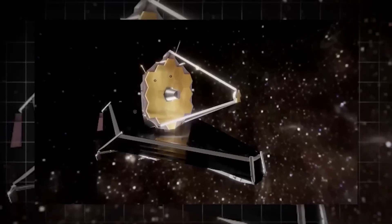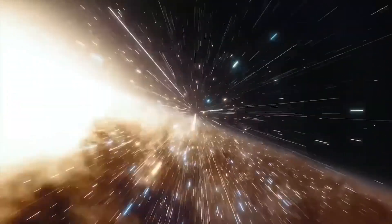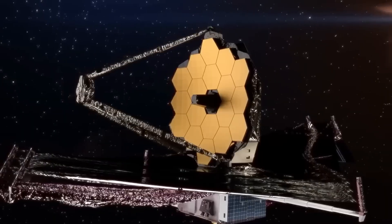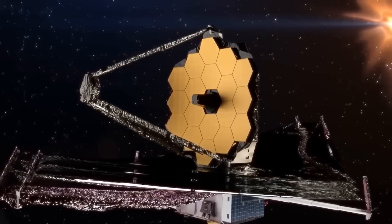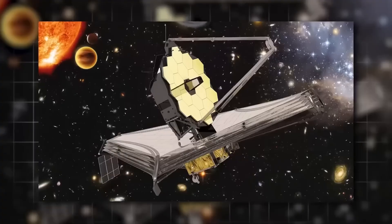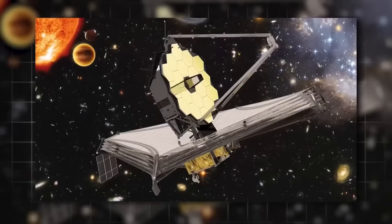For further context, take Voyager 1, launched in 1977, which travels at a speed of 38,000 miles per hour. It didn't leave our solar system until 2012, which means it took 35 years just to cross that boundary.